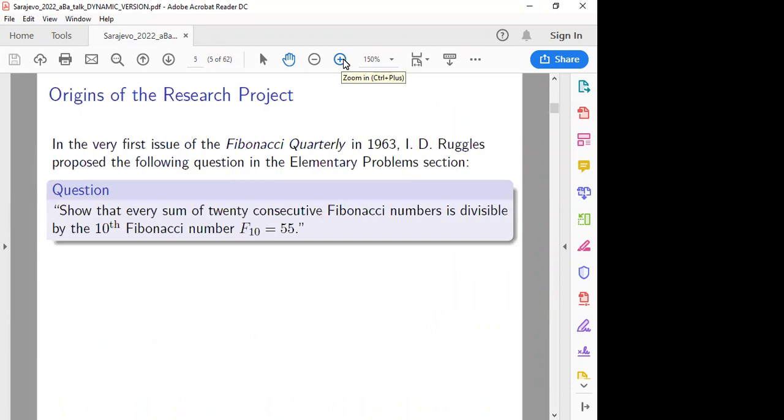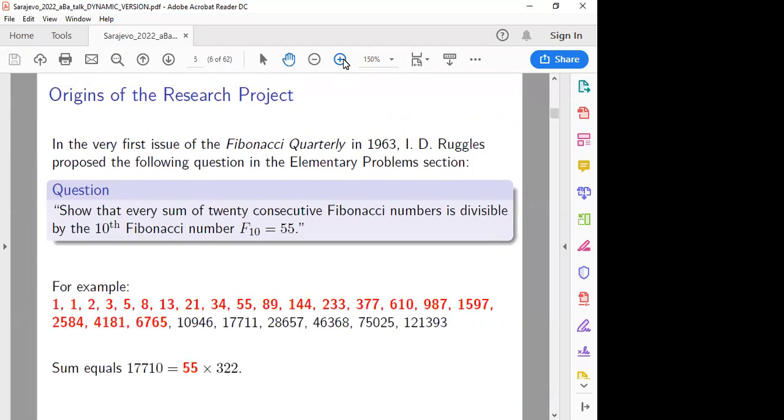Okay, so what is the origins of this project? The very first issue of the Fibonacci quarterly in 1963, so it's issue number one. The following question was posed by I.D. Ruggles. Show that every sum of 20 consecutive Fibonacci numbers is divisible by the 10th Fibonacci number, F10, maybe the number 55. So for example, we have a set of numbers starting with F1, and then we go 20 numbers. The sum is 17,710, and indeed that's 55 times something.